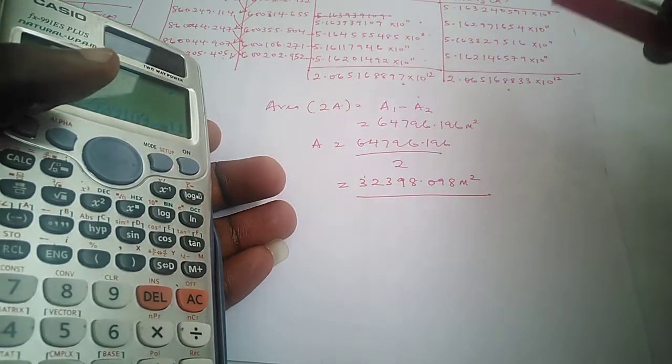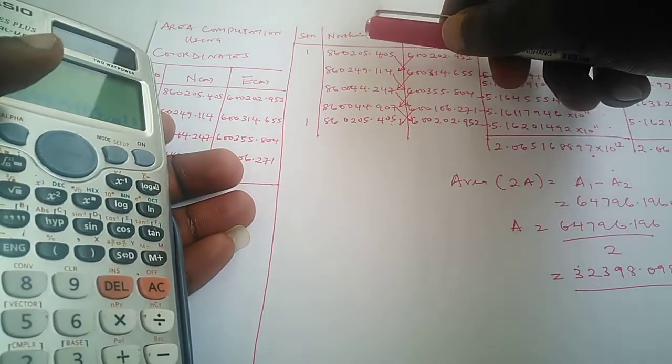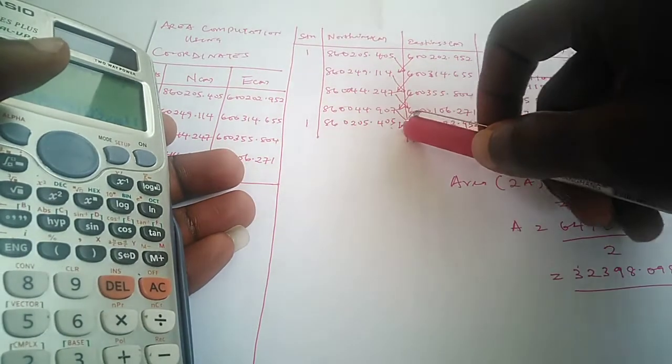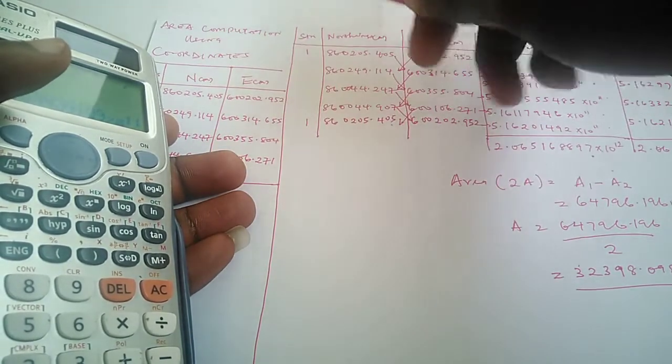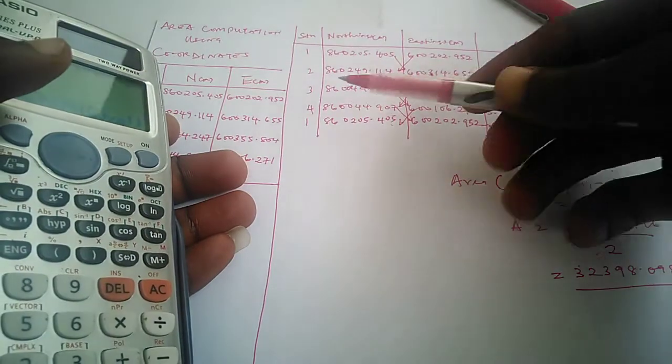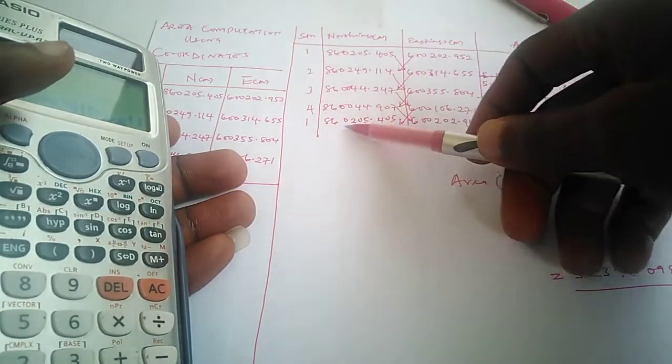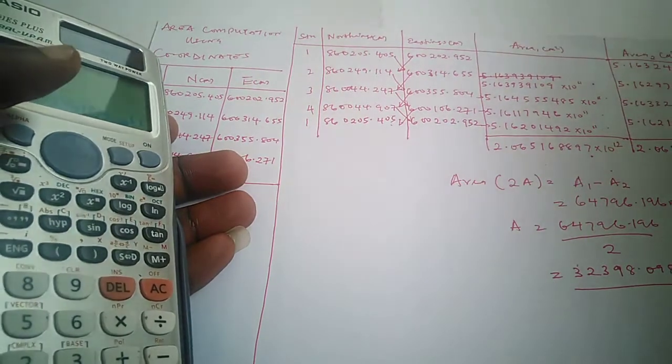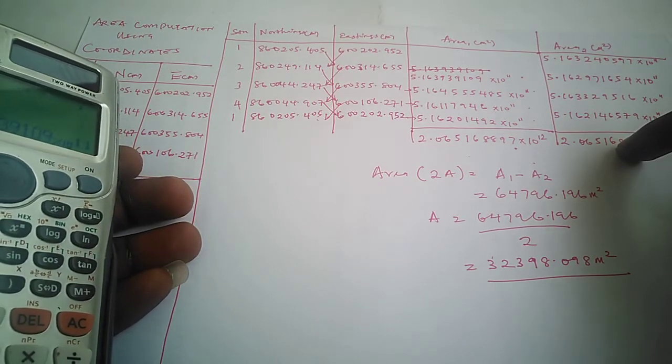There was something I failed to mention on this table. By the time you input the coordinates of the points, you repeat your first point. I actually made the comment here by writing one—this is one, this is two, this is three, and this is four. The essence of repeating one here is to make sure we have a closed loop. That was the point I did not mention earlier. I've mentioned all the salient points you need to know in order to compute for area using coordinates method.